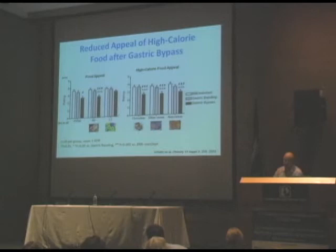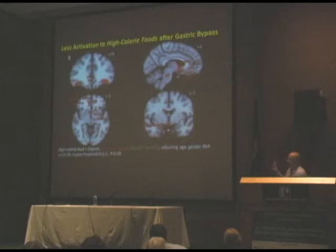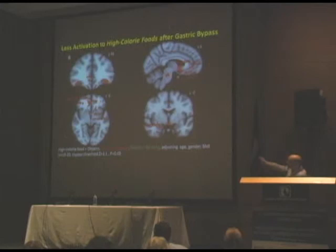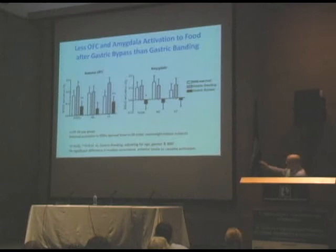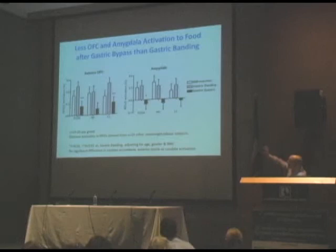In the scanner, we asked people to rate how appealing they found food pictures, and found a selective reduction in the appeal of high-calorie foods in patients after gastric bypass compared to gastric banding — across chocolate, sweet, and savory high-calorie foods. When we looked at brain activation to food pictures, several areas in bypass patients showed less activation to high-calorie foods compared to banding patients, despite being similarly unhungry. These include the orbitofrontal cortex, ventral striatum, caudate, and amygdala.